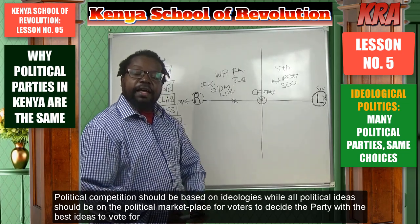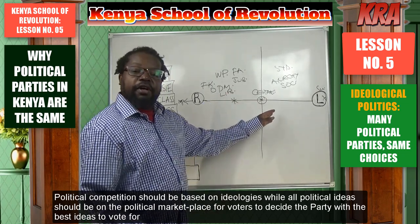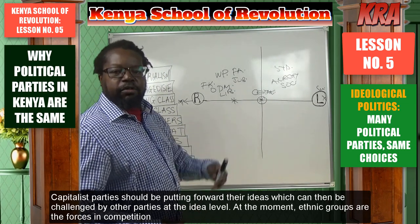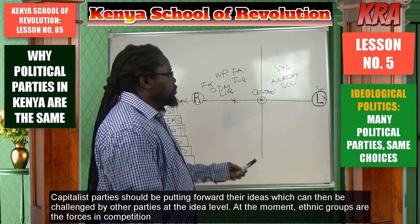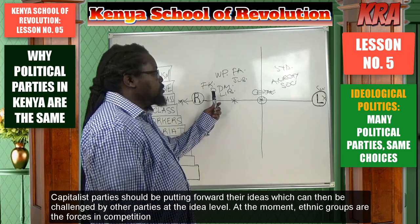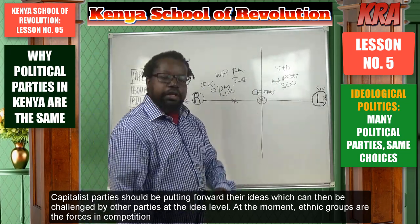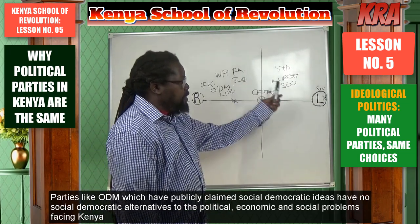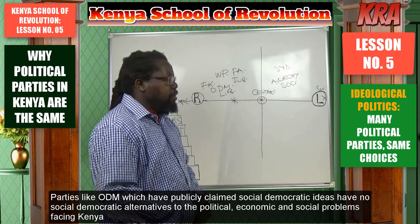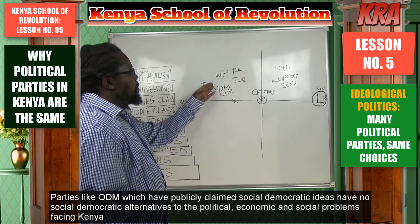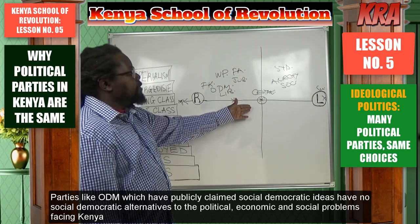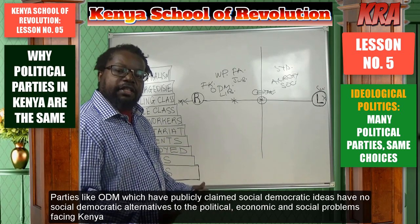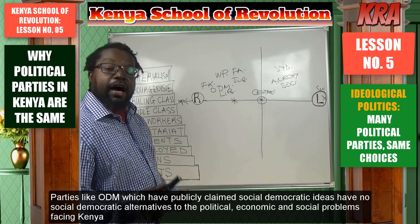In this kind of situation, we have ideological opposition — a party that believes capitalism is good in Kenya finds opposition from a party that says capitalism is not good and socialism or anarchism or syndicalism should be practiced instead. The problem in Kenya is that majority of the political parties find themselves on the right side, even though they don't profess capitalism. This is fundamentally why parties in Kenya are the same.